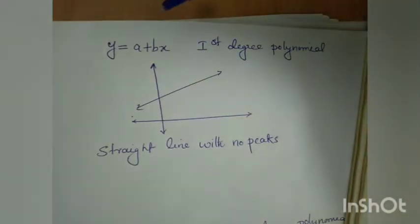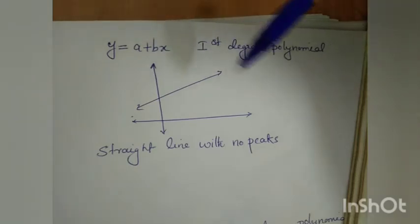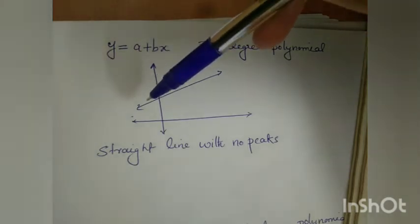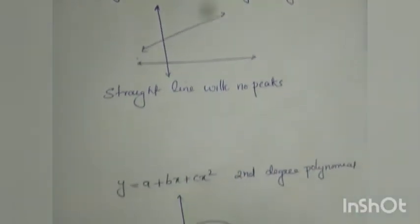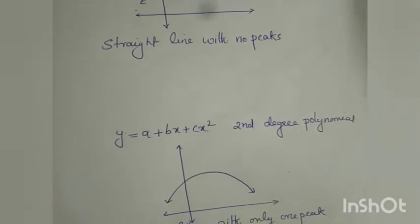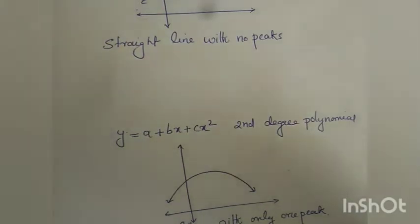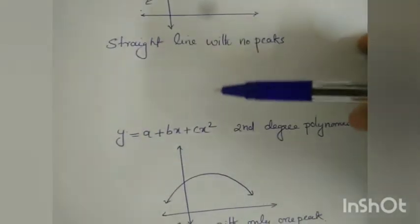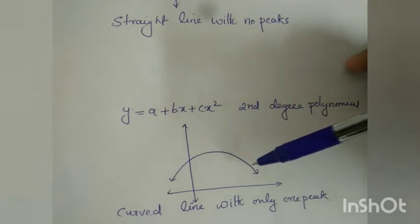A first order polynomial can be represented as y equals a plus bx. From the figure, we can see that for a first order polynomial, it is a straight line with no peaks. But in the case of a second degree polynomial, which is represented as y equals a plus bx plus cx squared, it is a curve with only one peak.